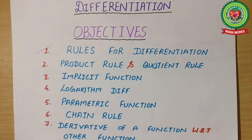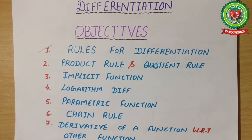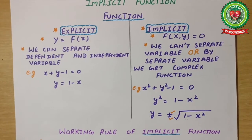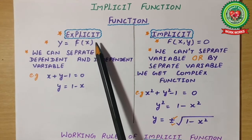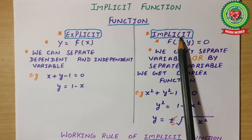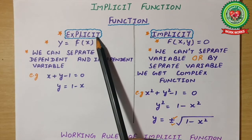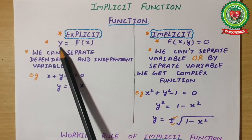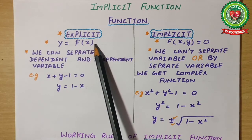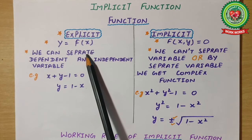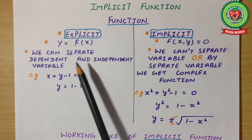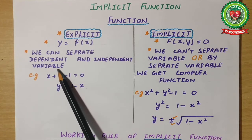In differentiation we will always consider functions. For implicit functions, functions are of two types: explicit function and implicit function. Explicit functions we have already discussed, in which the function is in the form y = f(x), or where we can separate the dependent variable on one side and the independent variable on the other side.